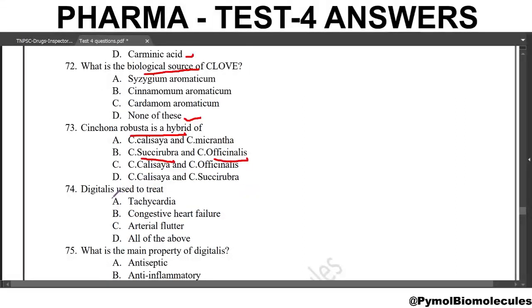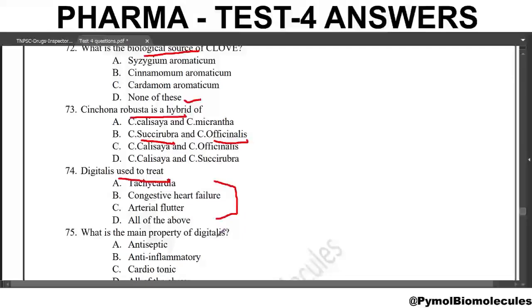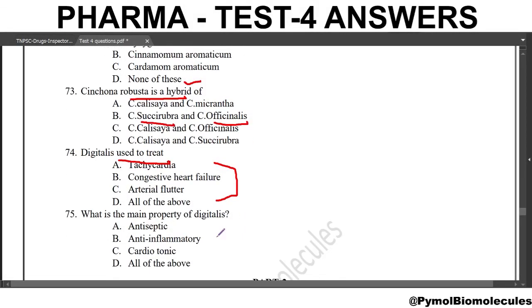Next question: digitalis is used to treat which conditions? Digitalis is used to treat tachycardia, congestive heart failure, and atrial flutter. Next question: what is the main property of digitalis? The answer is that it is a cardiotonic.